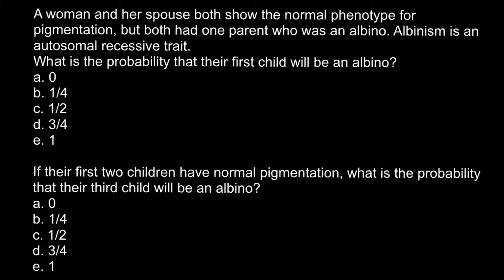So here is the first problem. A woman and her spouse both show the normal phenotype for pigmentation, but both had one parent who was an albino, and albinism is an autosomal recessive trait. What is the probability that the first child will be albino?